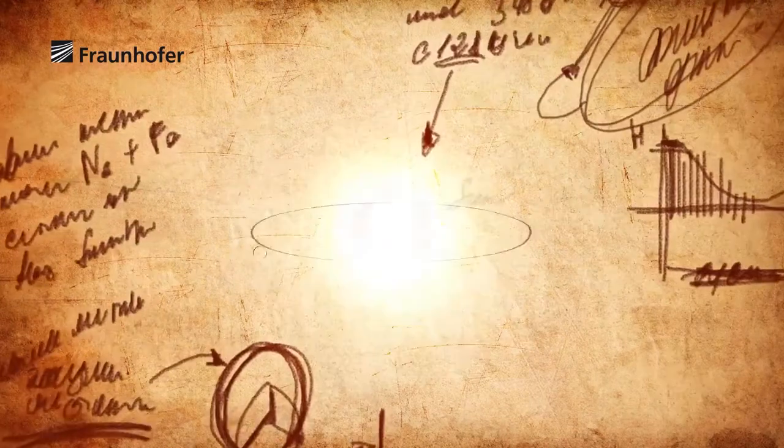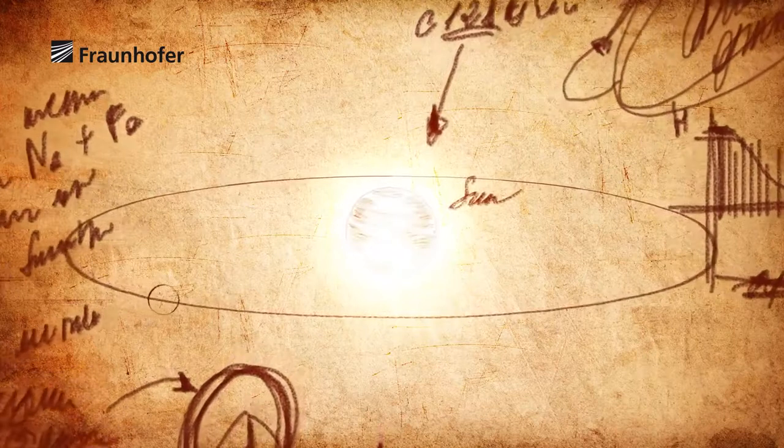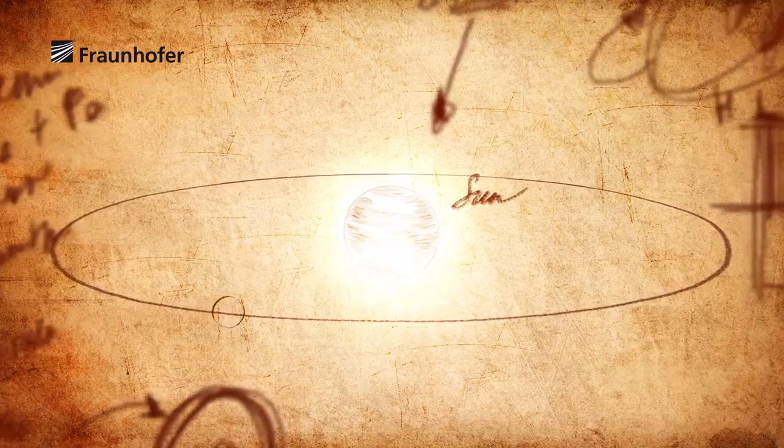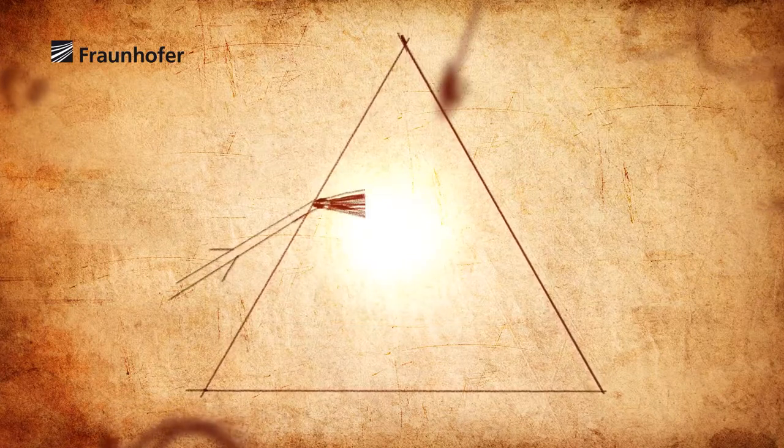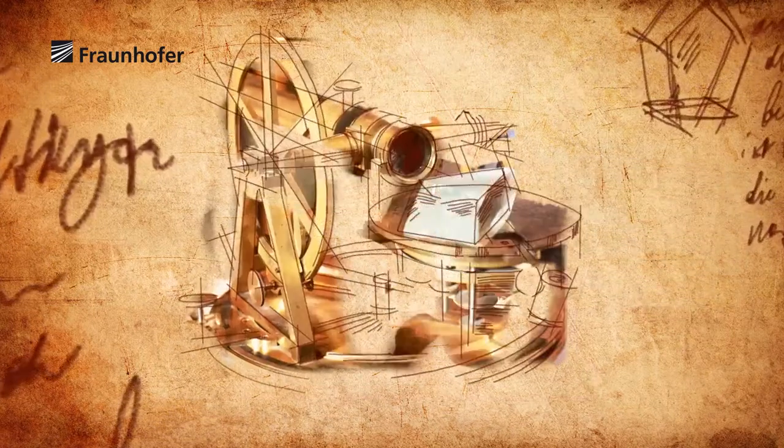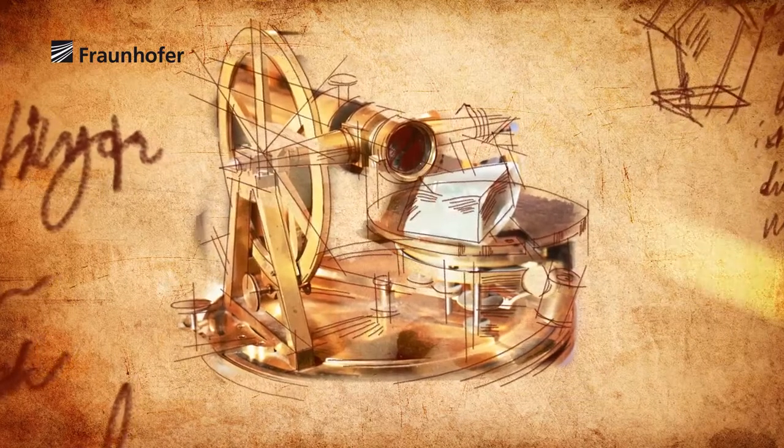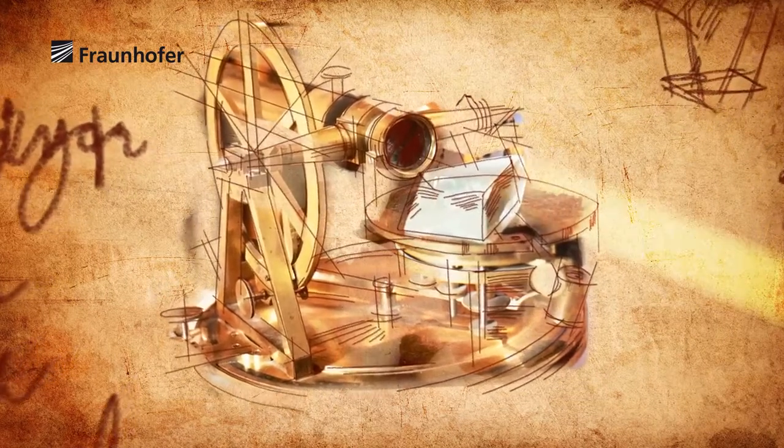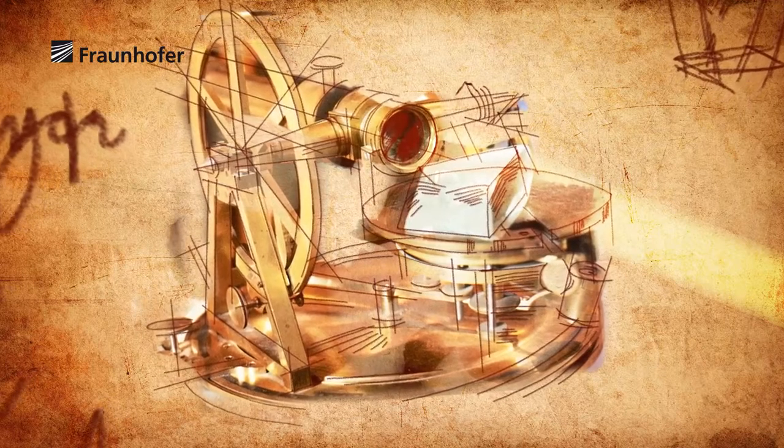He experimented with different light sources, for example with the sun. When sunlight enters a prism, a colorful arc appears, the spectrum. Fraunhofer developed an optical device that splits the light into its spectral colors. With this spectrometer, he could examine the colors more accurately.